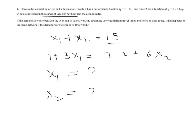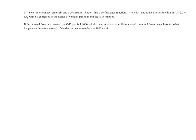What happens when the question is, if the demand between OD pairs is only 1,000? Let's try to get that set up. So instead of 15 now, I'm going to say x1 plus x2 equal to 1. And my second equation will still remain the same, because I still want to equate the travel time on both of those routes. So 4 plus 3x1 should still be equal to 2.2 plus 6x2.